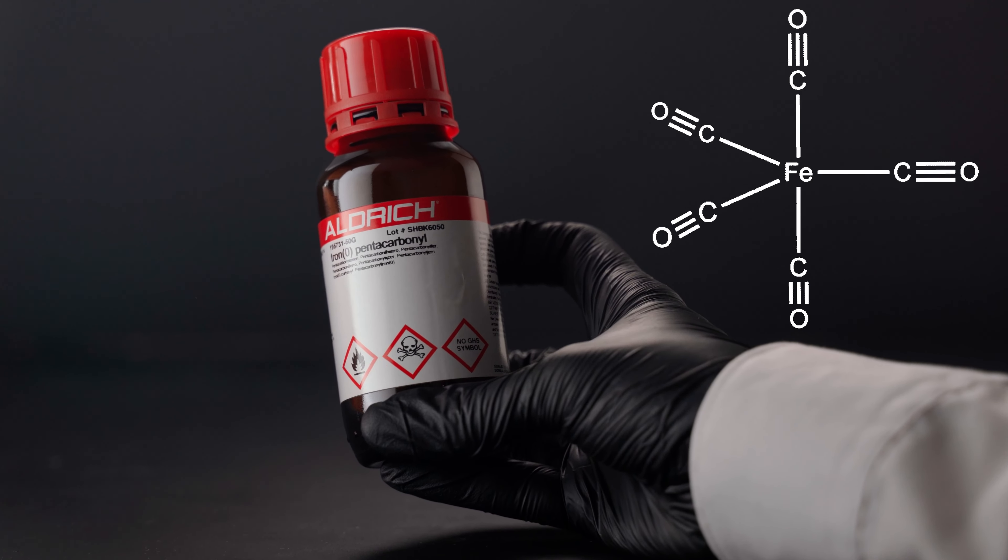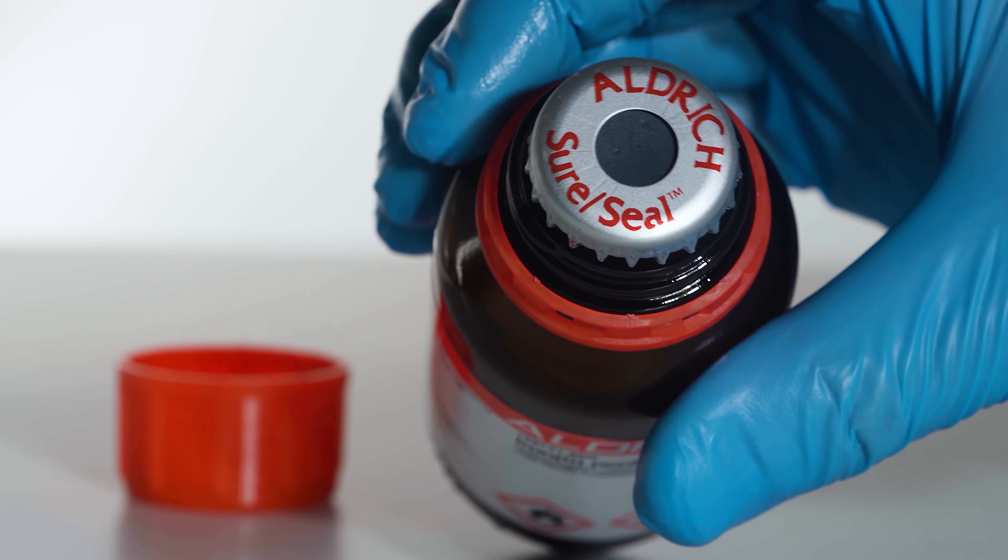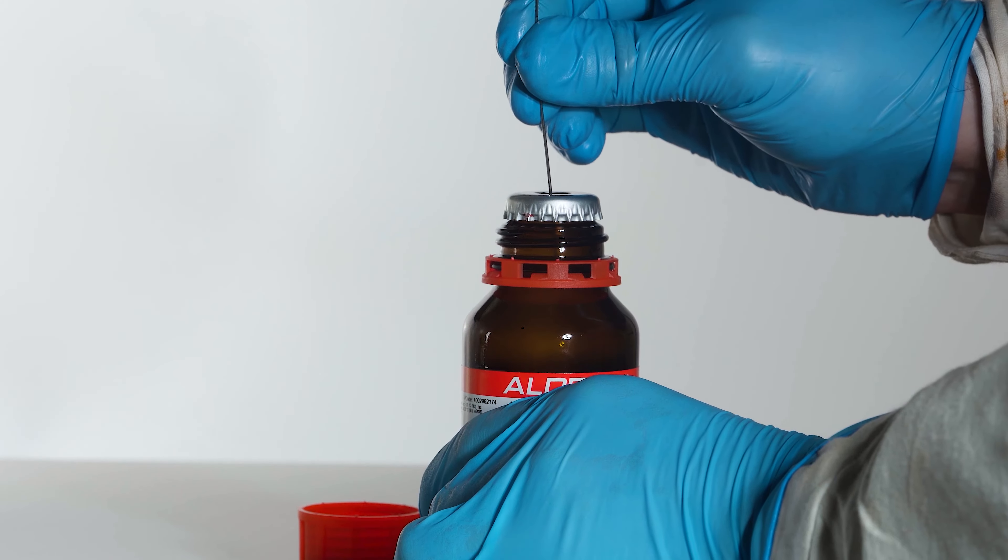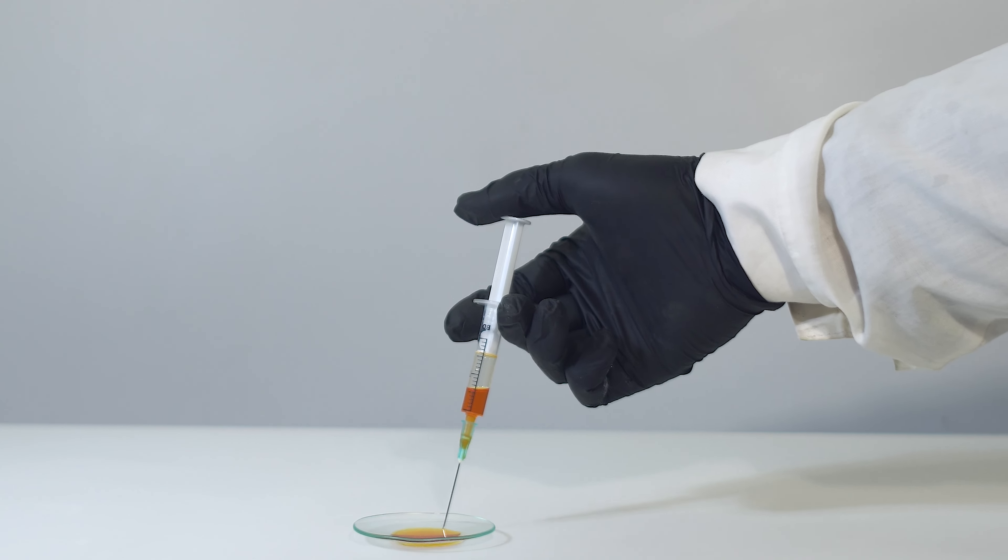The reaction between iron pentacarbonyl and tert-butyl hydroperoxide carries out with the formation of a mushroom cloud that burns down afterwards, turning into ferric oxide, or in other words, rust.